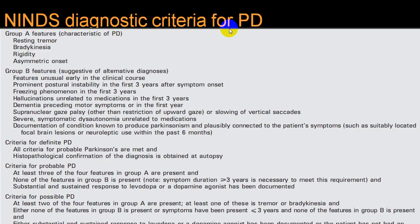There are NITS diagnostic criteria for Parkinson's disease with Group A and Group B categories. For definite Parkinson's disease, all criteria from probable must be met. For probable Parkinson's disease: at least three of four features in Group A, plus none of the features in Group B. For possible Parkinson's disease: at least two of the four features in Group A, at least one being tremor or bradykinesia, and Group B features with less than three years duration. These are the NITS criteria.